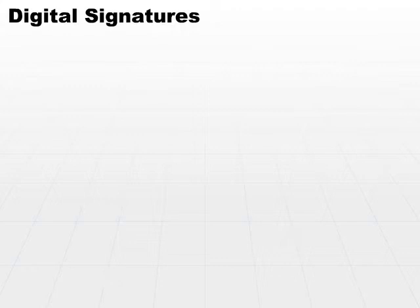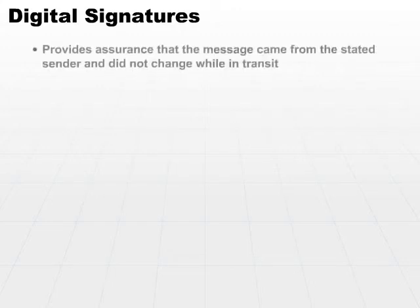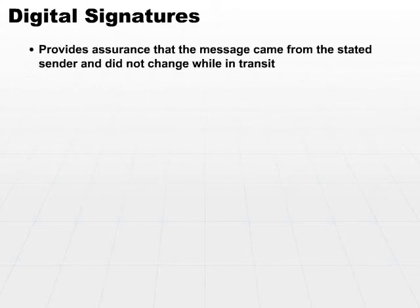One of the first features of implementation is the use of the digital signature. Now we've all heard about digital signatures, but it's important to understand exactly how it's used. A digital signature provides assurance that the message came from the stated sender and the message did not change in transit. So we have non-repudiation, and we also have the integrity feature as well.